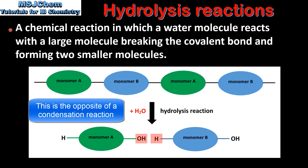Next we look at hydrolysis reactions. A hydrolysis reaction is a chemical reaction in which a water molecule reacts with a large molecule, breaking the covalent bond and forming two smaller molecules. Here we have our biopolymer made from alternating monomers A and B. In the reaction with a water molecule, the covalent bond between the monomers is broken, forming two small molecules: monomer A and monomer B.